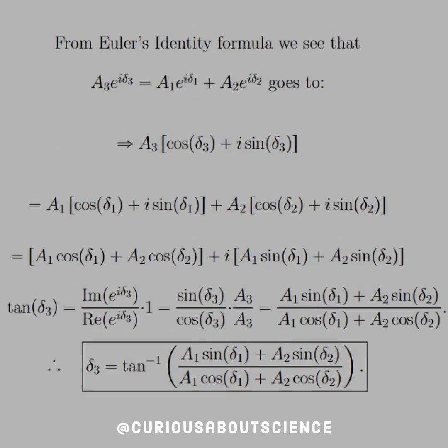Now, we get to do a little more work with Euler's identity. So, we still need to determine what δ₃ is. To do this, we see that we have A₃e^(iδ₃) equals A₁e^(iδ₁) + A₂e^(iδ₂), and so on and so forth. Now, the left-hand side, we can break the exponential down into a cosine and a sine term, which we do. And similarly, we can do that on the right-hand side.